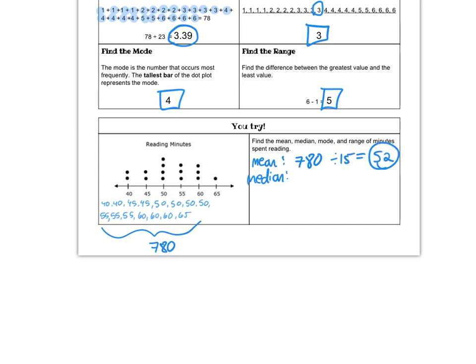The median is going to be the number in the middle, and in this case, that's 50. There are seven numbers before 50 and seven numbers after 50. So our median is 50.